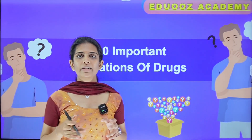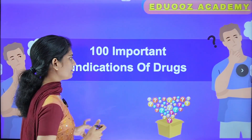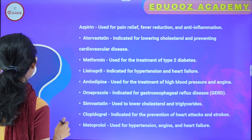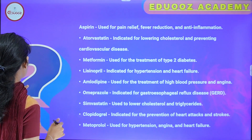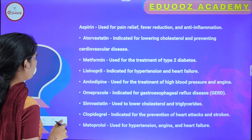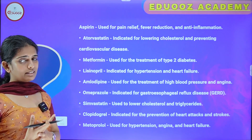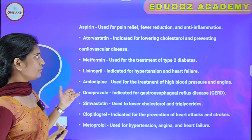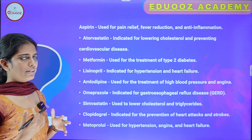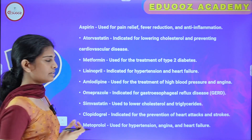We are going to discuss 100 important indications of drugs. First one: Aspirin. Aspirin is used for pain relief, fever reduction, and inflammation. That is why we use it as an NSAID drug — for pain relief, fever reduction, temperature lowering. It is an antipyretic drug and also an anti-inflammatory drug.